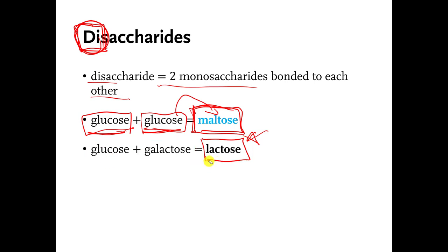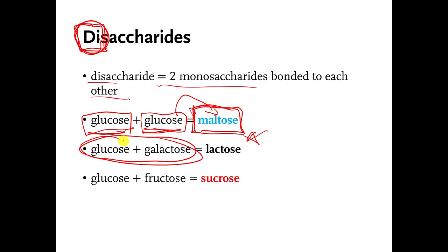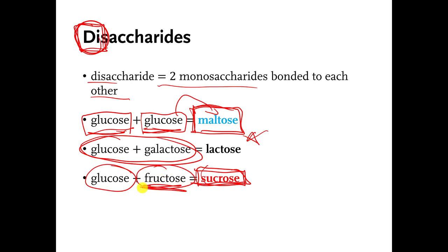People who are lactose intolerant are unable to break the attachment between these two sugar molecules. The one that you and I eat most frequently is called sucrose — we just call it table sugar. That is a disaccharide made from glucose and fructose, which is another monosaccharide. Now in the next slide I'm going to show you the general chemistry of how to make a disaccharide.